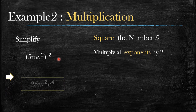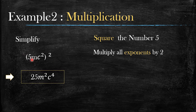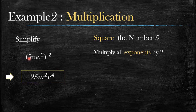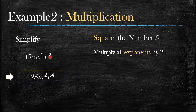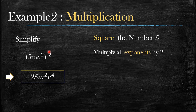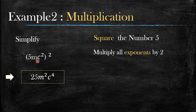Let's look at another example. Here everything is inside a bracket with a small 2 on the outside. The first instruction is to square the number 5: 5 to the power 2 gives you 25. You can type it into your calculator. That squaring only applies to the number part.